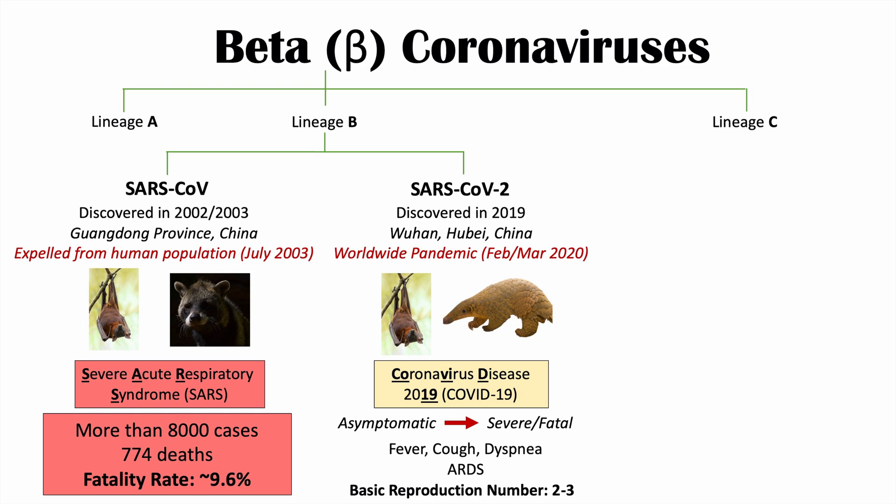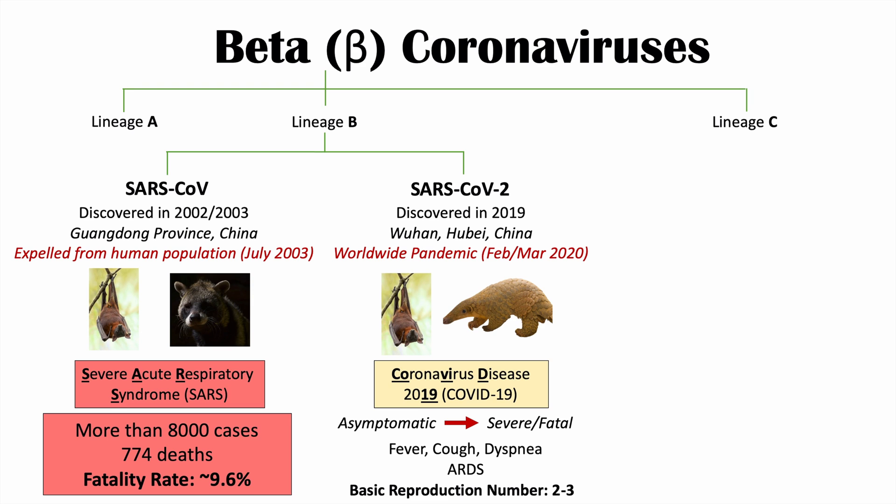A troubling aspect is that individuals can be asymptomatic and still spread the virus. As of the recording of this lesson, there are more than 1.3 million cases with approximately 75,000 deaths. The fatality rate has been quoted at anywhere from 1 to 3%, though this will continue to be monitored as the situation evolves.